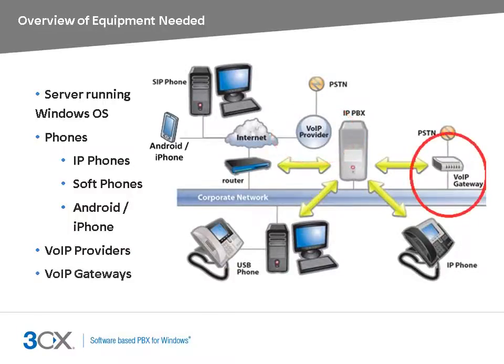The second way to connect to the PSTN is by making use of a VoIP gateway, whose function is to translate SIP-based information in a way to be transmitted over the PSTN. In this case, you would need either an ISDN line or an analog line attached to the VoIP gateway.